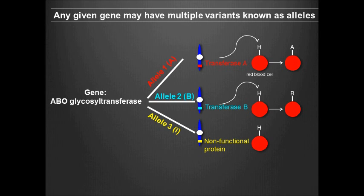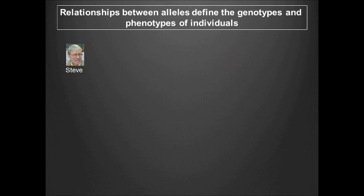Lastly, allele 3, denoted by a little i, produces a non-functional glycosyl transferase. In Mendelian genetics, a common practice is to denote alleles of genes with letters. The use of different letters to denote the alleles of a gene is a shorthand representation of the fact that each allele is functionally different at the molecular level. An individual's genetic makeup, or genotype, manifests as an observable trait, or phenotype.